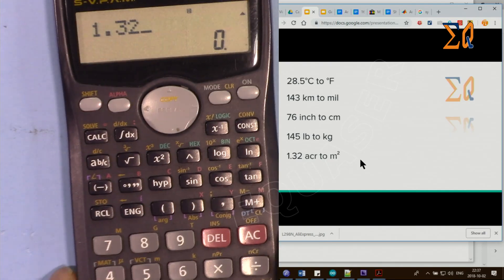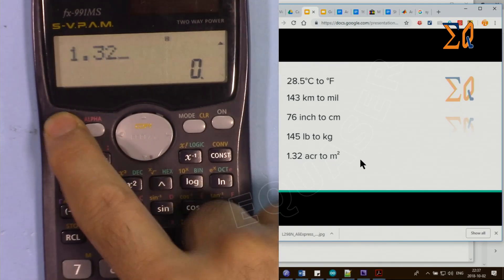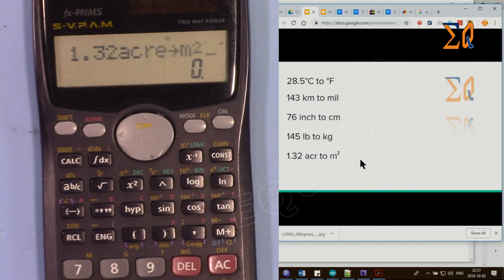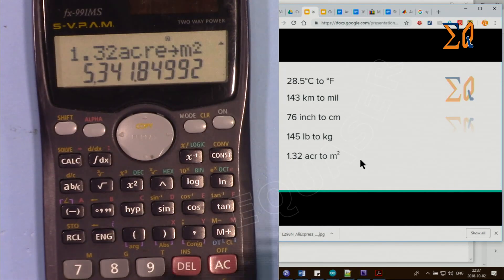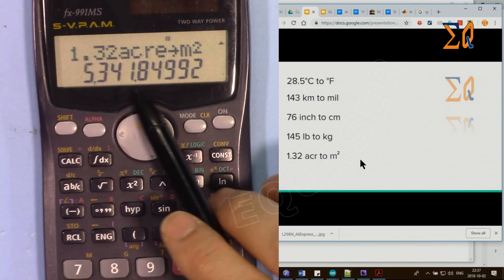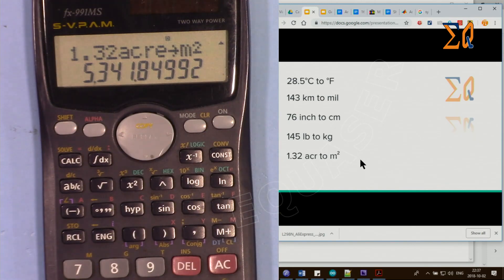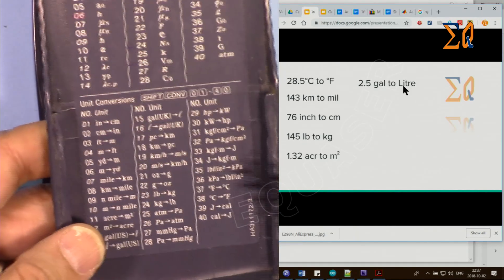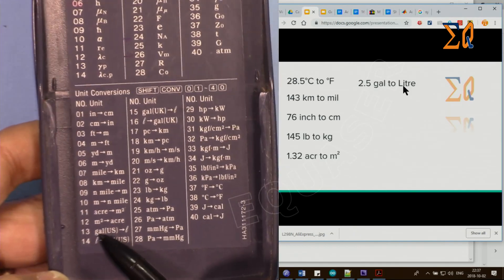Let's say you have 2.5 US gallons to convert to liters. For US gallons we use number 13. 2.5, convert, 13, US gallon to liter, 9.46 liters.